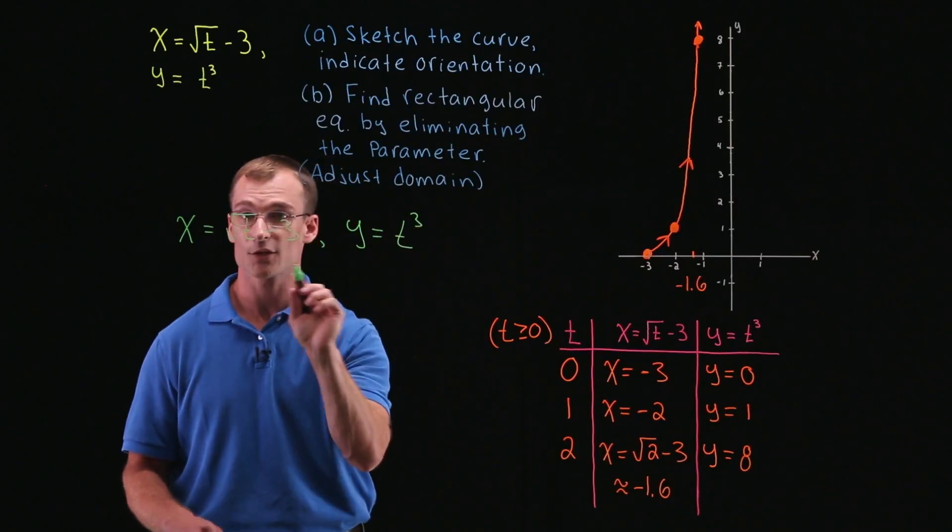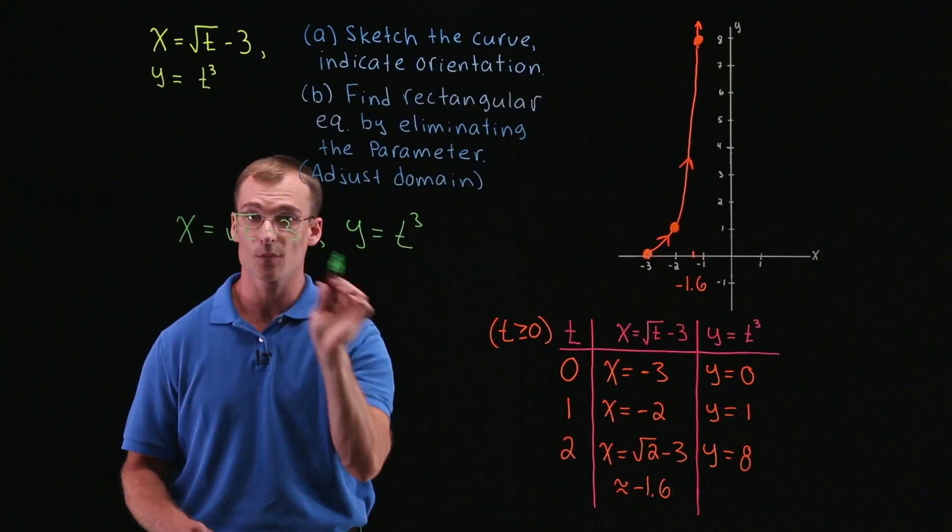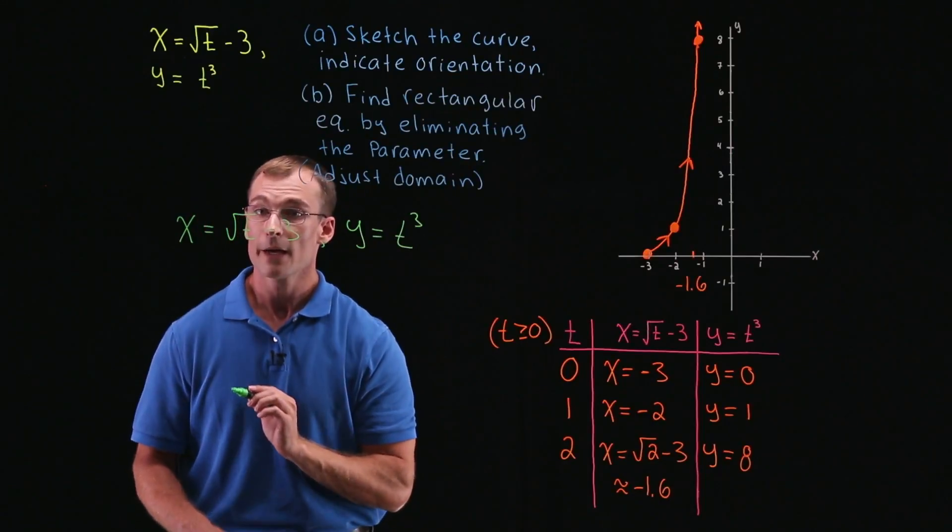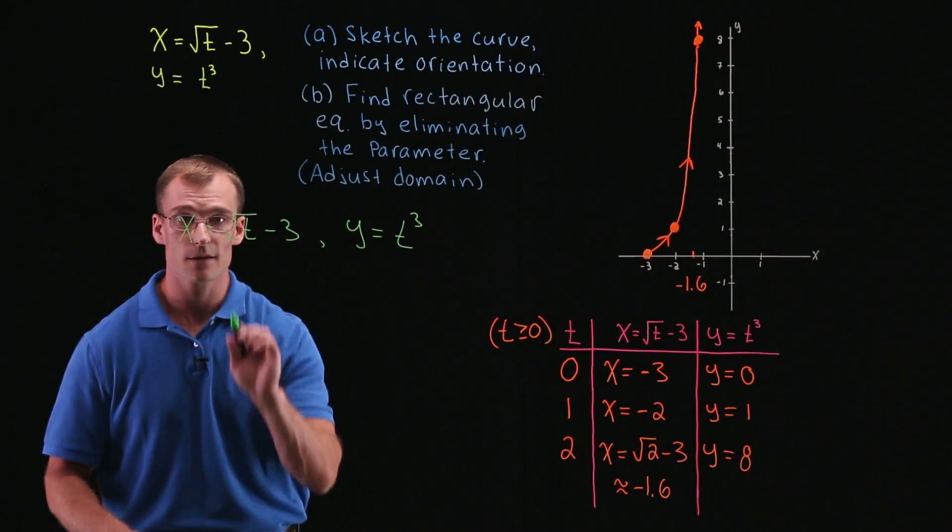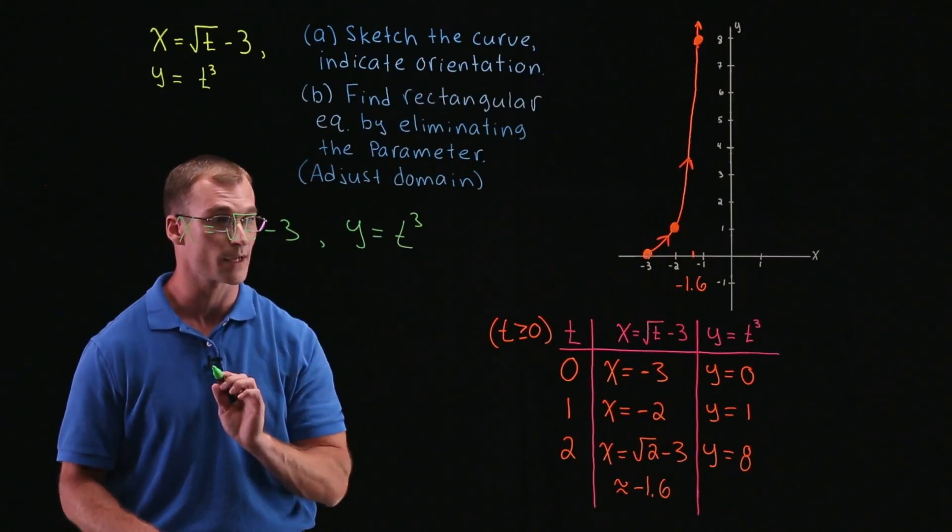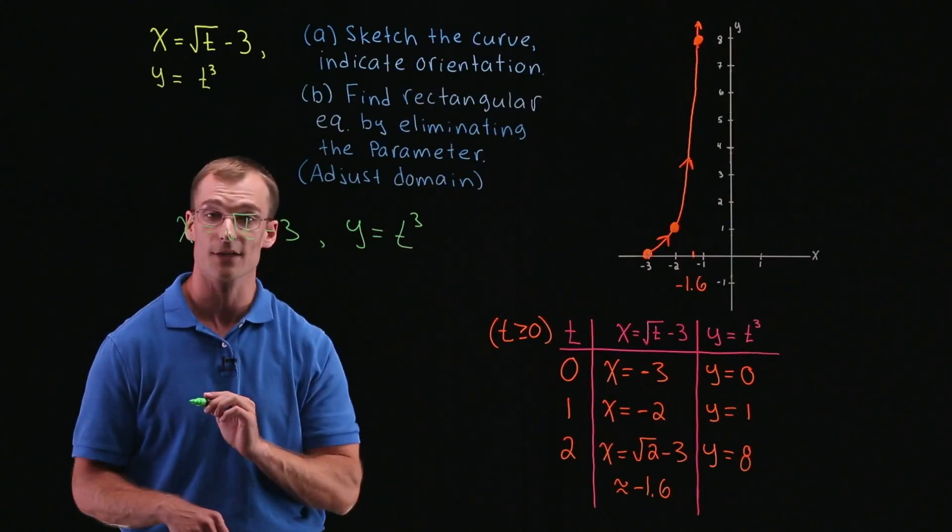So we can do this by solving one of the equations for t, plugging it into the other one, and then simplifying. And so whichever one we pick, it really doesn't matter. Let's go ahead, maybe start with x. And we'll plug that over into here, since it's traditional to write y as a function of x.